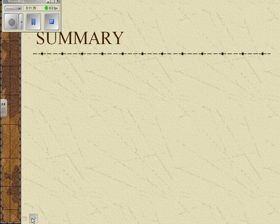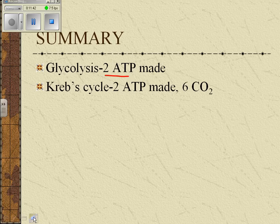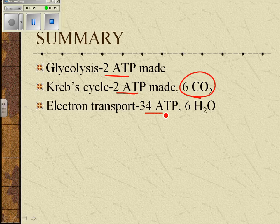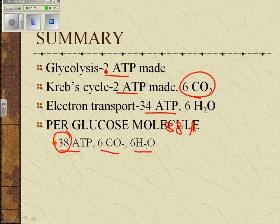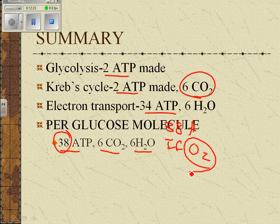To summarize: in glycolysis we made two ATPs; in the Krebs cycle, two more ATPs were made and we produced six carbon dioxides; in electron transport, 34 ATPs are made, for a total of 38. Per glucose molecule: 38 ATPs, six carbon dioxide, and six water molecules. There's some argument about this number — some biologists say 36 ATPs because they don't count the two ATPs made during glycolysis. But for every glucose molecule, 38 ATPs, six carbon dioxide, and six water, if you have enough oxygen to run the reactions.